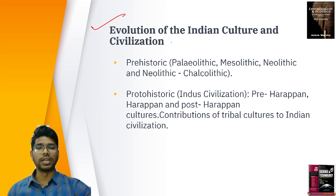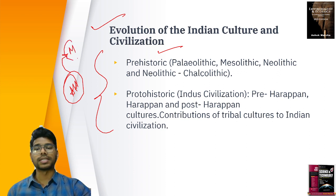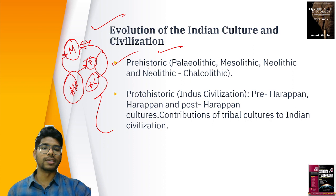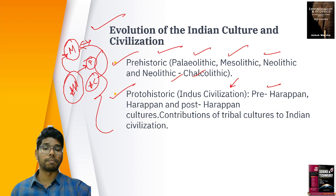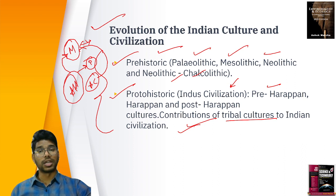In the syllabus of anthropology paper 2 we have: evolution of Indian culture and civilization — the same content studied in ancient history for general studies. Note: ancient history is only for prelims, while art and culture is for mains. We cover prehistoric periods — Paleolithic, Mesolithic, Neolithic and Chalcolithic — and proto-historic: Indus civilization, pre-Harappan, Harappan and post-Harappan civilizations. We also study contributions of tribal cultures to Indian civilization.